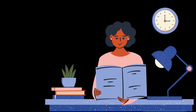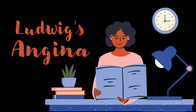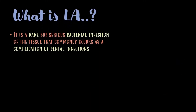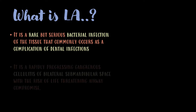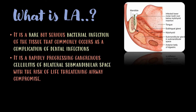Hello everyone and welcome to the Dentist Hub. In today's video we will be learning about Ludwig's Angina. Ludwig's Angina is a rare but serious bacterial infection of the tissue that commonly occurs as a complication of dental infections. It is a rapidly progressing gangrenous cellulitis of bilateral submandibular space with the risk of life-threatening airway compromise.